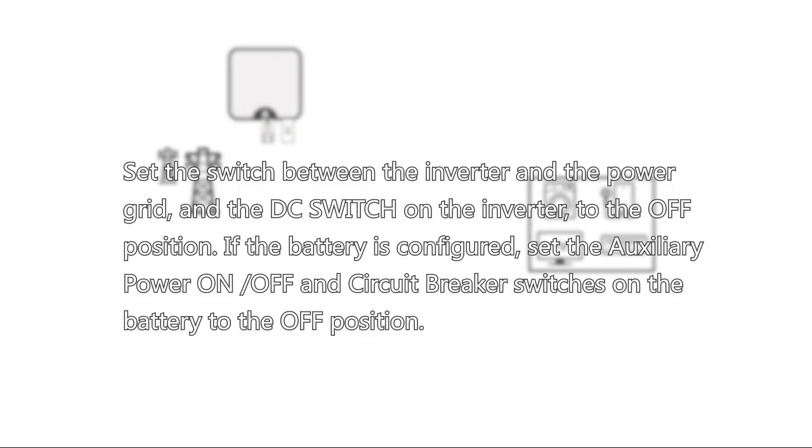Set the switch between the inverter and the power grid, and the DC switch on the inverter to the OFF position. If the battery is configured, set the auxiliary power ON/OFF and circuit breaker switches on the battery to the OFF position.